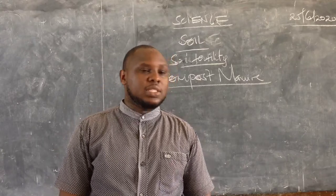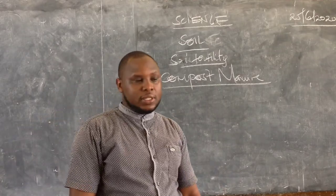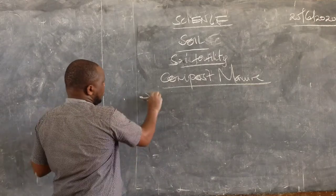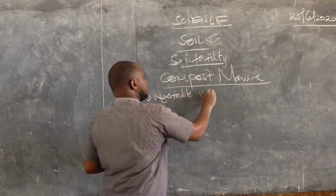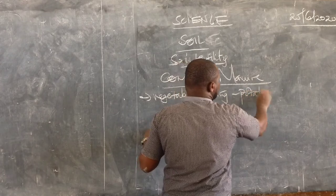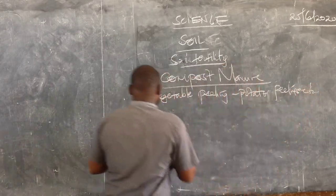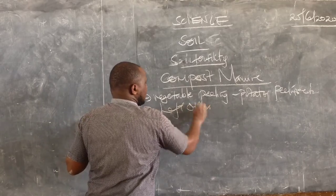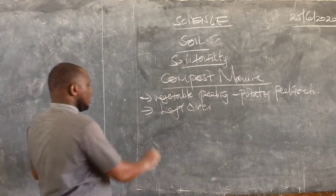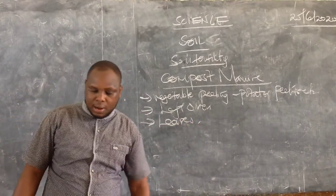Good morning learners. Our third lesson today is going to be compost manure. Remember where we left? We had discussed about the materials that are used to make compost manure. Number one, we have vegetable peelings — all vegetable peelings in the kitchen, like potato peelings. Number two, we have leftovers of foods that we have already cooked and some pieces have remained. Leaves can also be used to make compost manure.